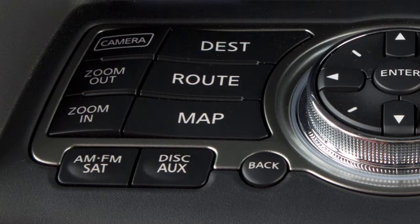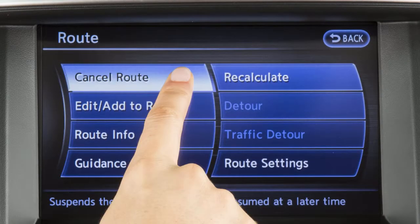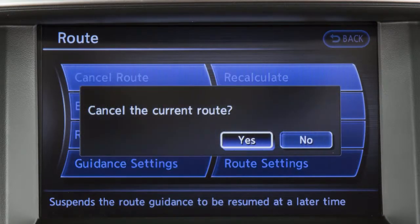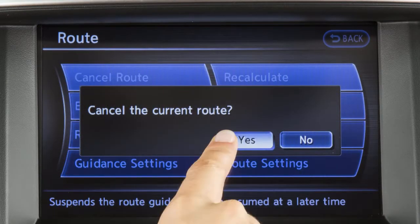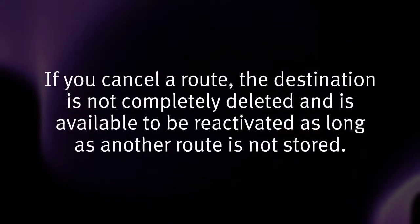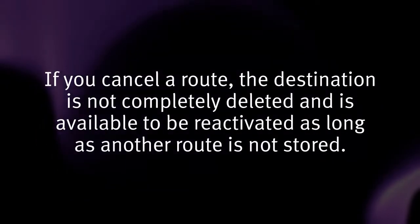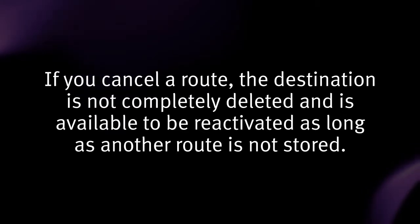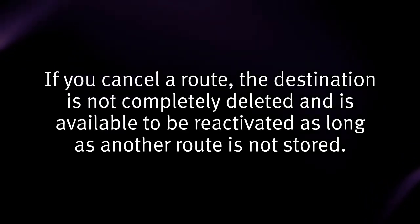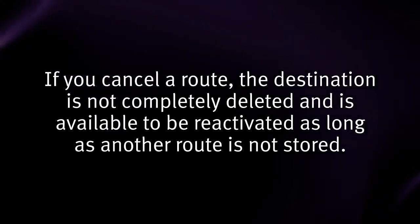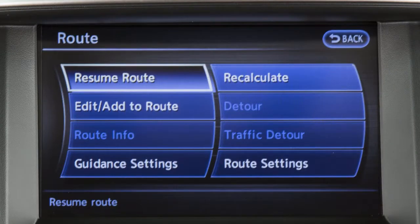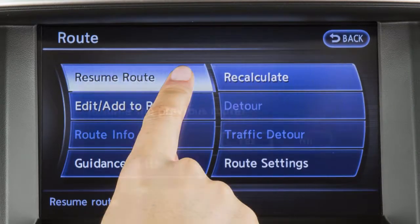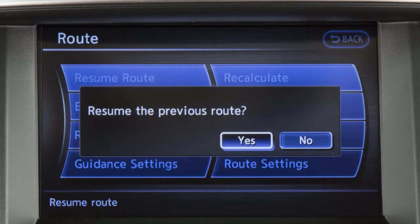To cancel a route, press the Route button, touch Cancel Route, then touch Yes to confirm. If you cancel a route, the destination is not completely deleted and is available to be reactivated as long as another route is not stored. To reactivate a canceled route, touch Resume Route on the Route menu screen.